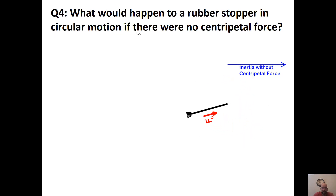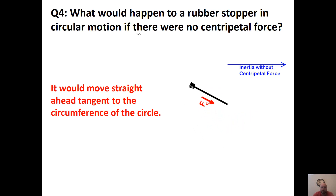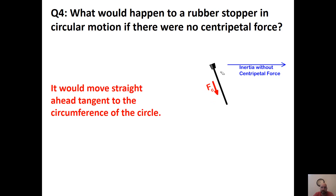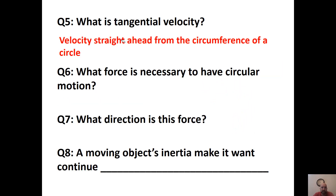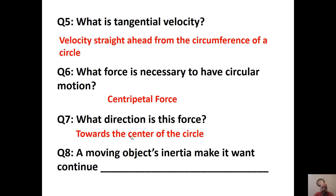What would happen to a rubber stopper in circular motion if there were no centripetal force? It would move straight ahead, tangent to the outside of the circumference of the circle — wherever it's cut, it gets released and goes straight ahead. What's tangential velocity? Velocity straight ahead from the circumference of the circle. What force is necessary for circular motion? You need centripetal force — the inward force directed towards the center. A moving object's inertia makes it want to continue in a straight line at constant velocity.